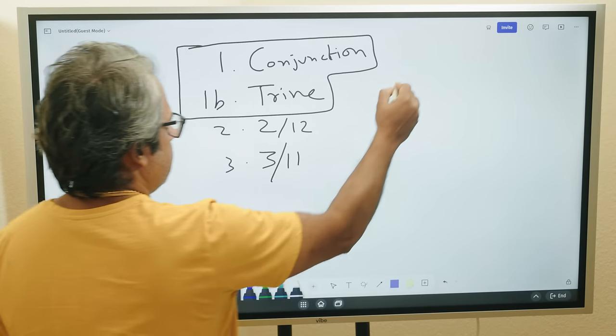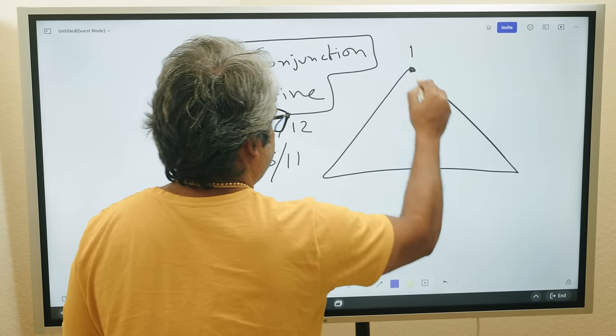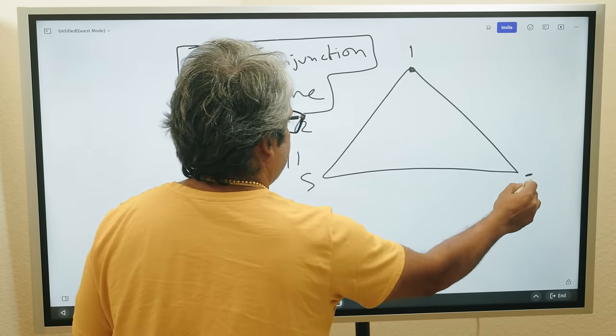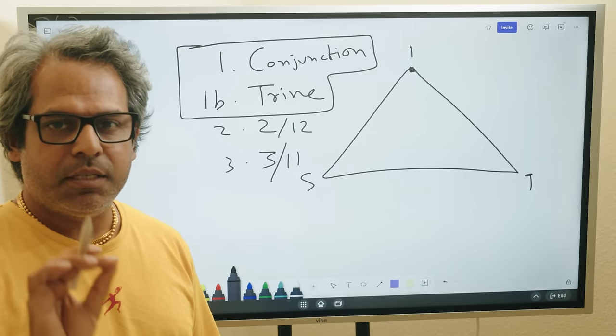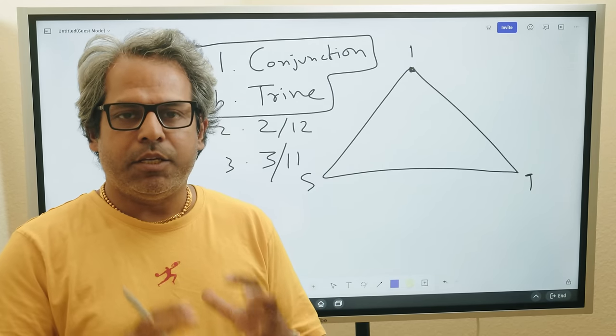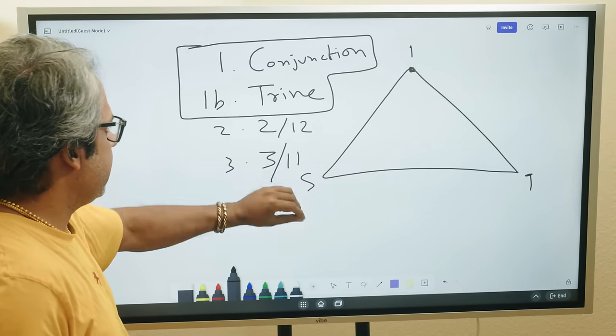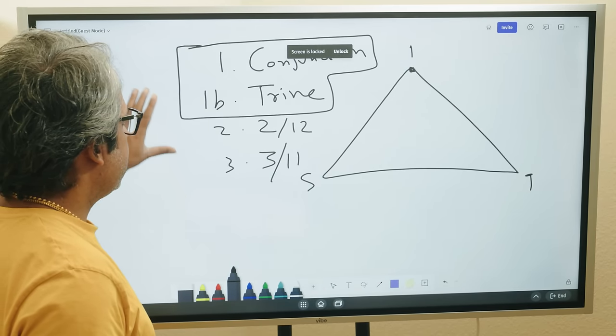The first thing you want to study is conjunction and trine, which is the same thing. That's why I put 1 and 1B. Then you have the triangle 5 and 9. You're studying a planet, this first is exactly what the planet is going to deal with.